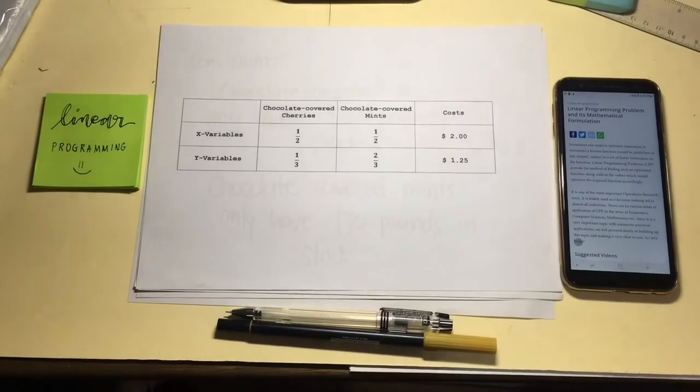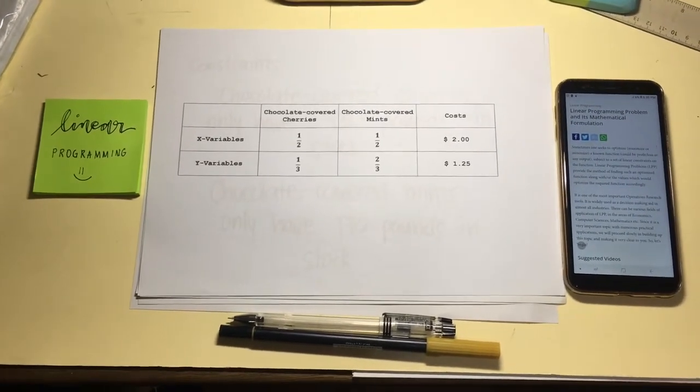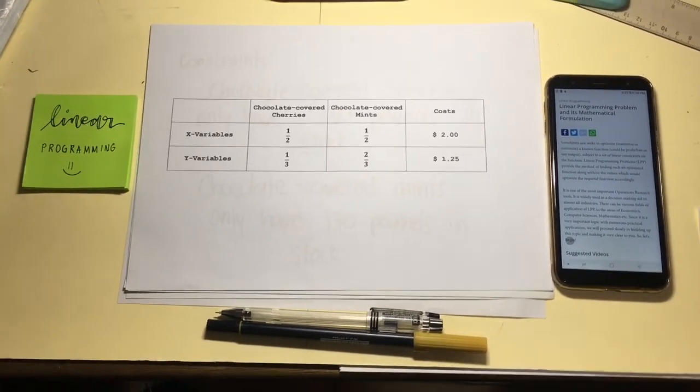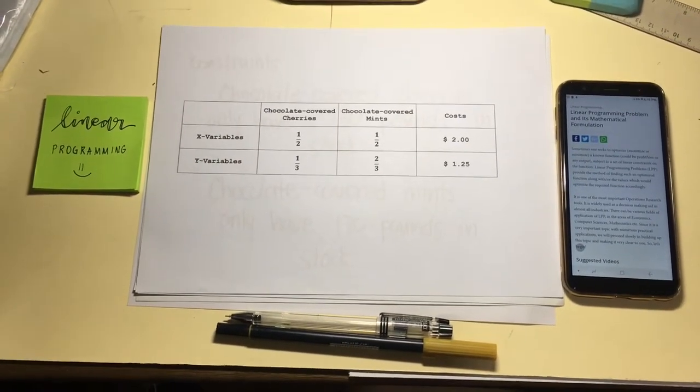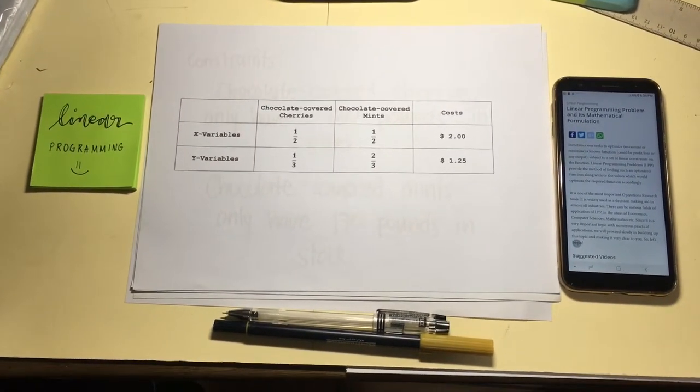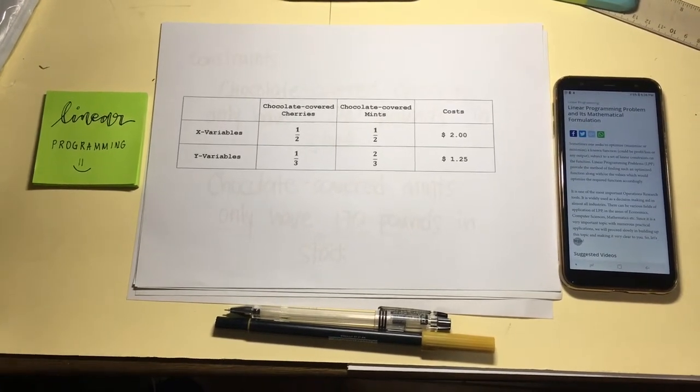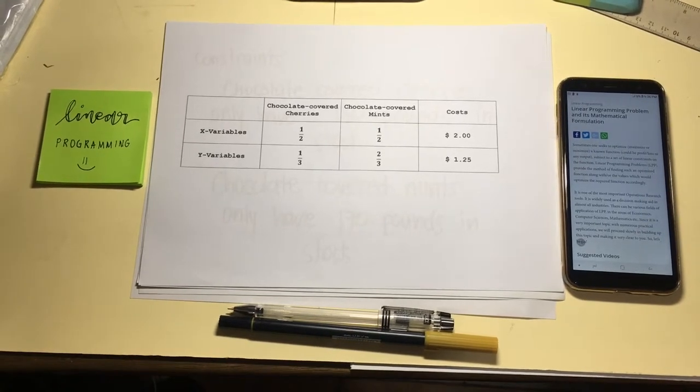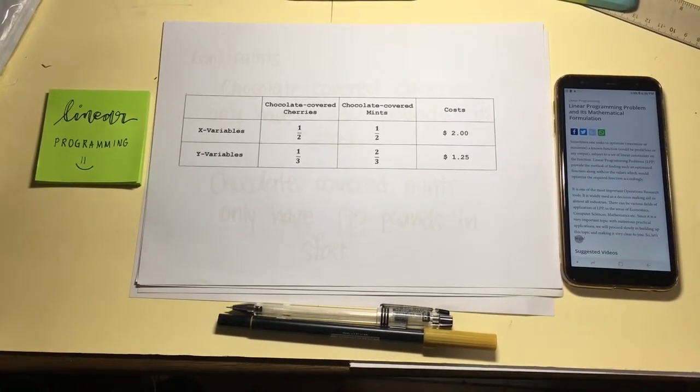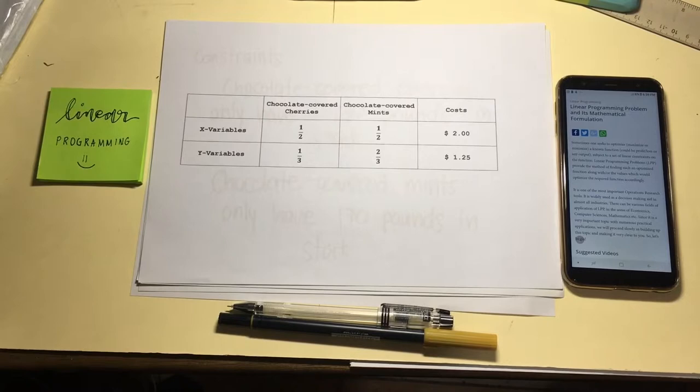Step 1 is to list the independent variables. The variables from this problem are the weight of two different candies from the mixture. Let X be the first mixture which contains one half of the chocolate covered cherries and one half of the chocolate covered mints with the cost of $2 per pound.